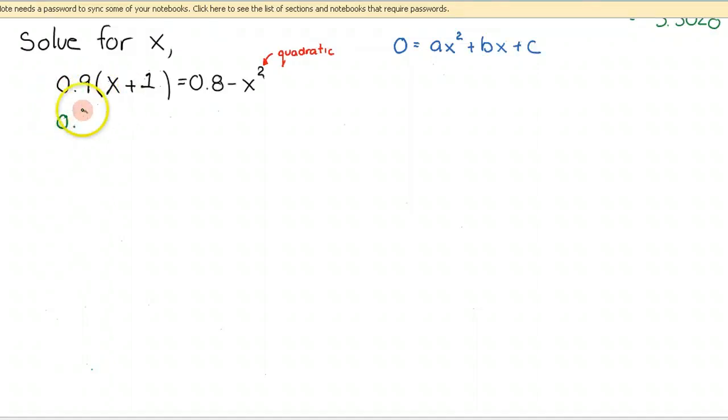So the first thing I'll do is multiply 0.9 into those brackets. And now I need to get all the terms to one side or the other. This is an important idea. Depending on if you move everything to the left-hand side or to the right-hand side, the a, b, and c terms are going to be different, but you will still get the same value. Personally, I like to avoid the x squared coefficient being negative, so I'm going to move everything to the left-hand side.